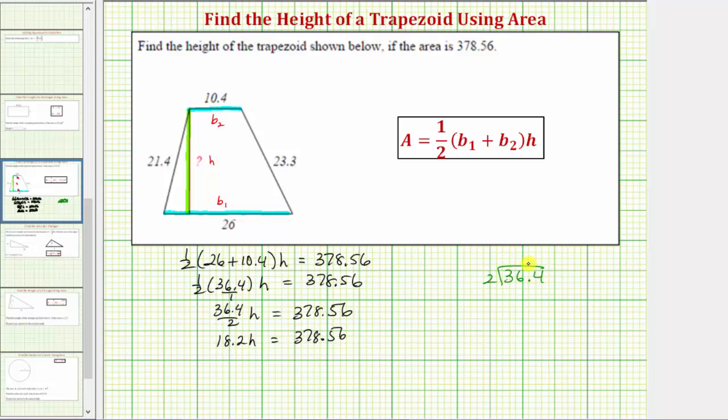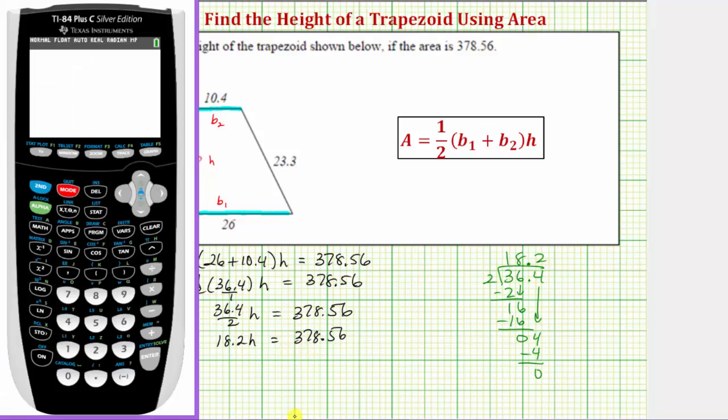Move the decimal point up into the quotient and divide like we normally do. Notice how the divisor is already a whole number. So there's one, two, and three. One times two is two, subtract, bring down the six. There are eight twos in 16. Eight times two is 16, subtract, bring down the four. There are two twos in four. Two times two is four. Subtracting, the difference is zero, verifying the quotient is 18.2.